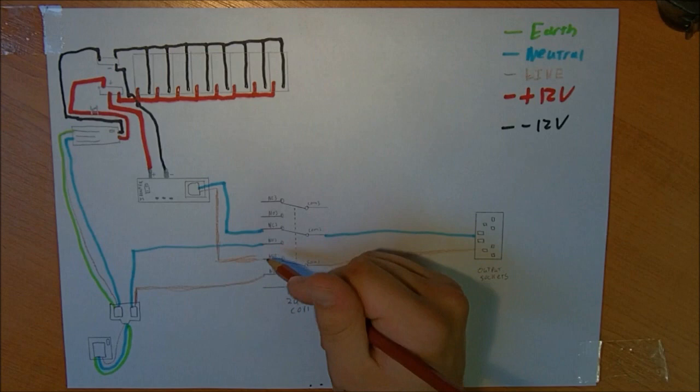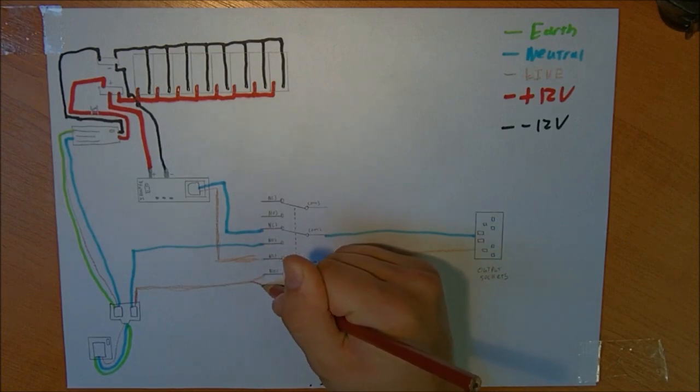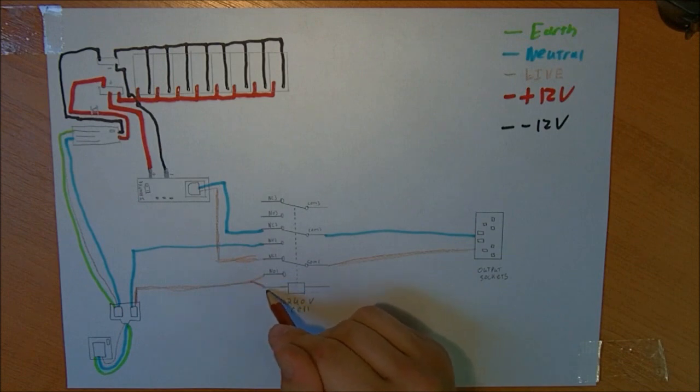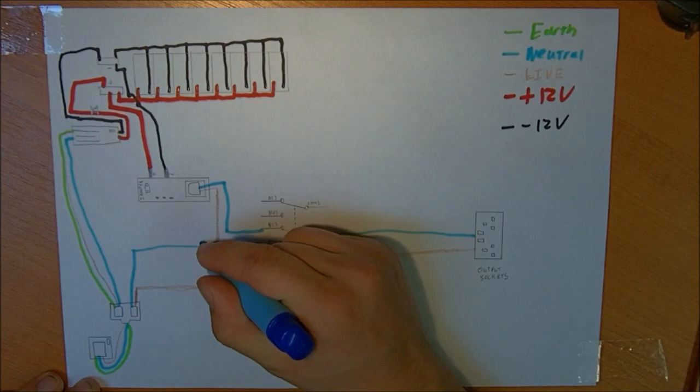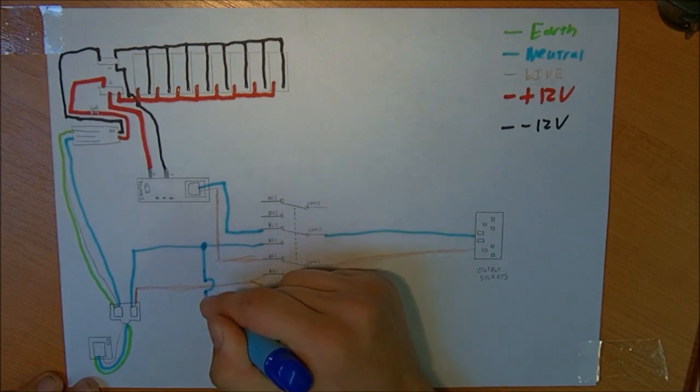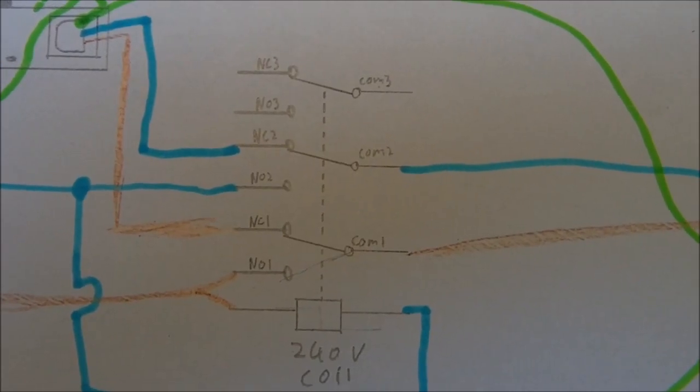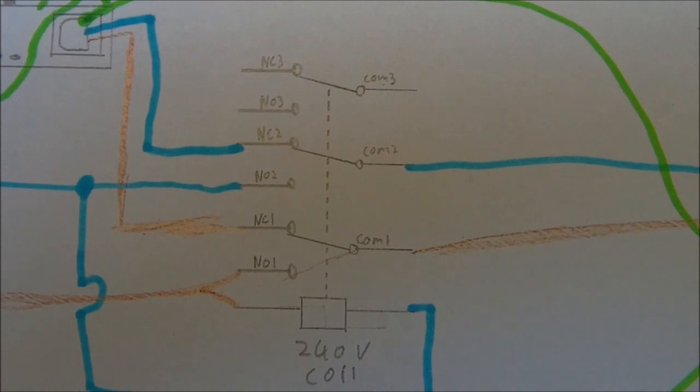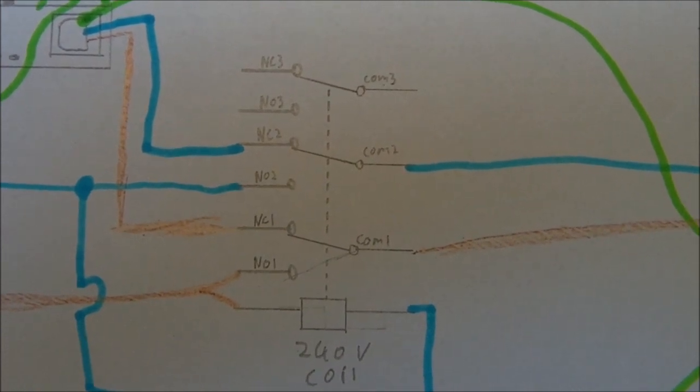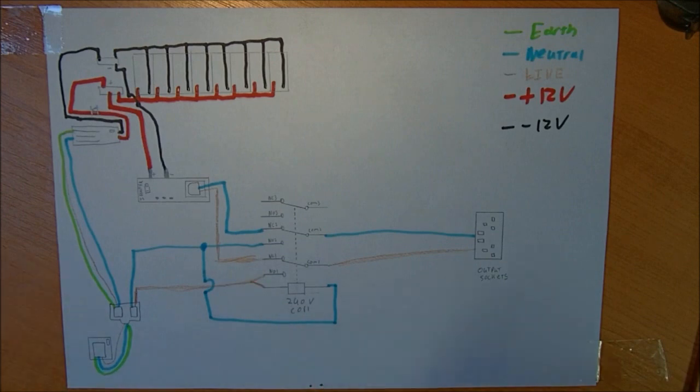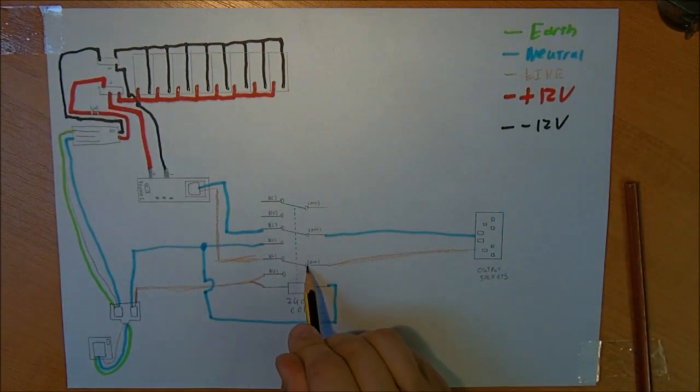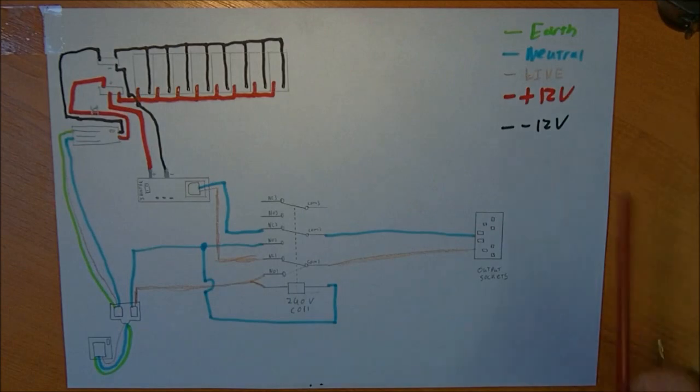So if we take a live just off of this one, this is the input plug for UPS. Connect that to one side of the coil and do the same with the neutral. There you go, that's a bit of a better view of the relay. Then this coil will now be powered. So that means every single one of these switches will have gone temporarily, like that, while the coil is energised.